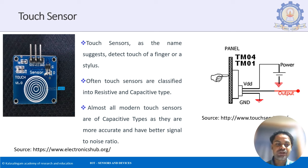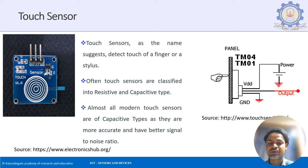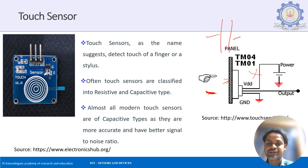The touch sensor can act as a simple switch. When you touch it, there is an output; when you don't touch it, there is no output. It works like a capacitor: the human body acts as the ground (negative terminal) and a positive supply is applied to the plate. When contact is made, capacitance is formed and charge is accumulated, producing an output.